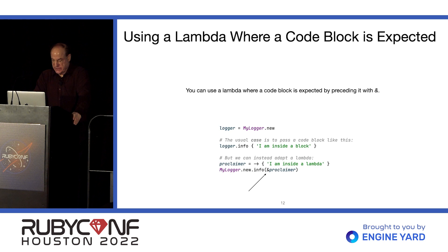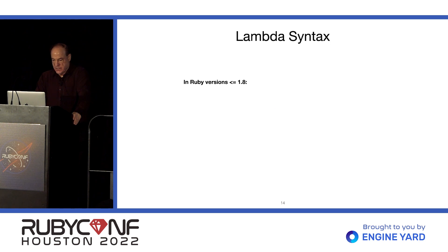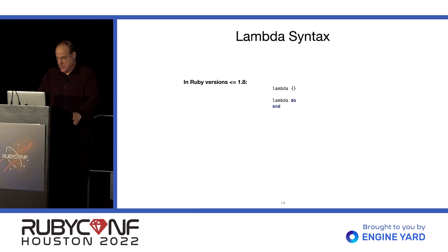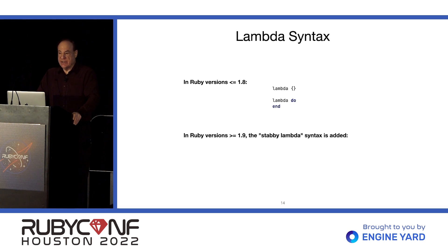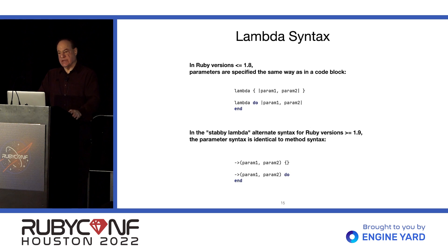If you want to use a Lambda where a code block is expected, you just precede it with an ampersand. If you want to use a method where a Lambda is expected, you can do this. In Ruby versions before 1.9, this was the only way to specify a Lambda — really the same as a code block. Starting in 1.9, we had the stabby Lambda notation added. If there are parameters, the old notation is the same as with code blocks, and with the stabby Lambda it's the same notation as method calls.